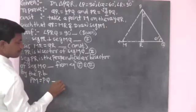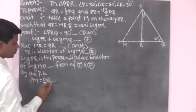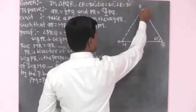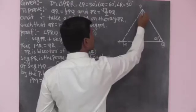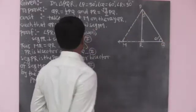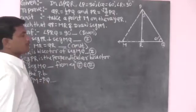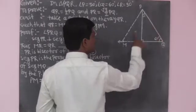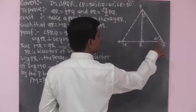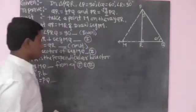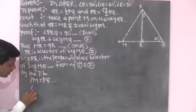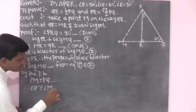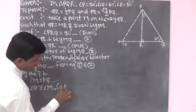When two sides of a triangle are congruent, look at triangle PMQ: the two sides PM and PQ are congruent. Therefore their opposite angles are also congruent. The angle opposite to side PQ is angle M, and the angle opposite to side PM is angle Q. These two angles M and Q are congruent. Therefore angle Q is congruent to angle M.